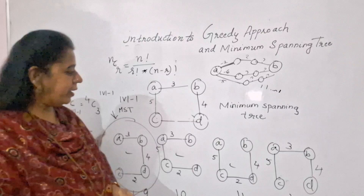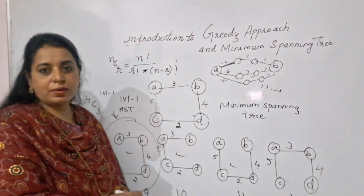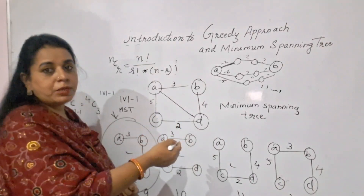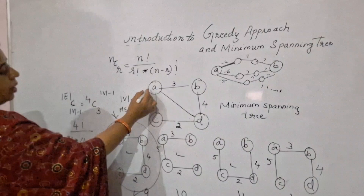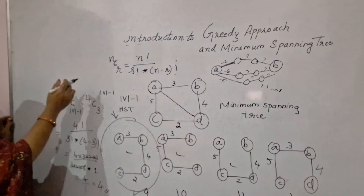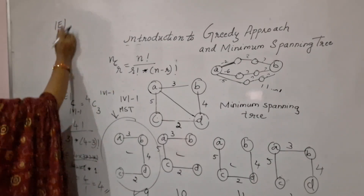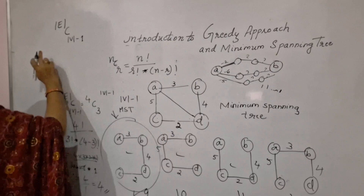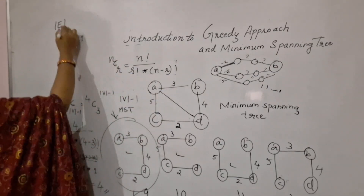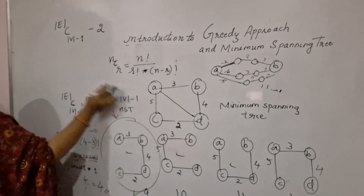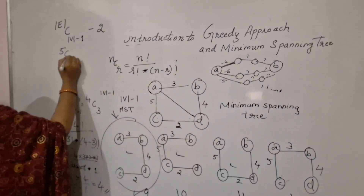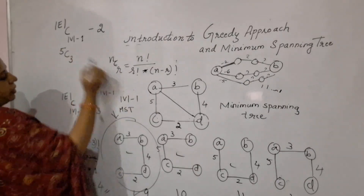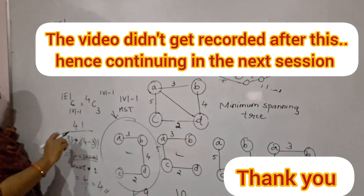For a graph where an additional edge creates cycles, the formula is adjusted. First, count the number of cycles formed in the graph. If there are two cycles, the formula becomes (E C V−1) minus 2. In this case, with five edges and needing three edges (V−1 = 4−1 = 3), you compute 5C3 minus 2, giving the number of possible spanning trees.